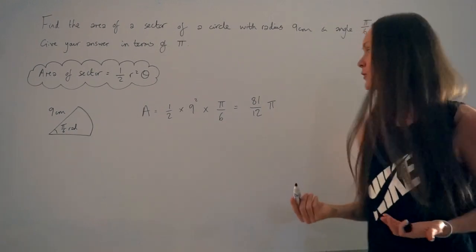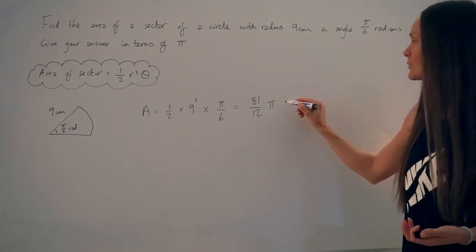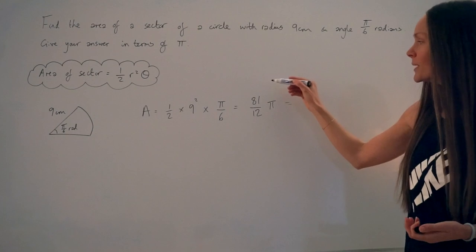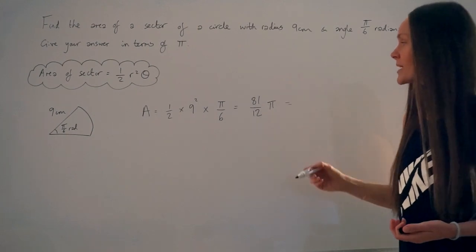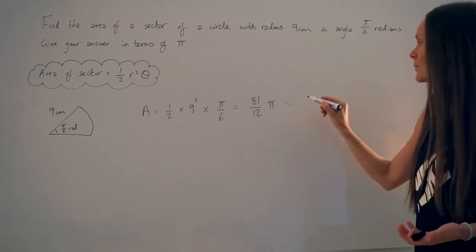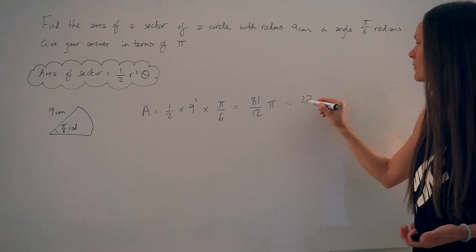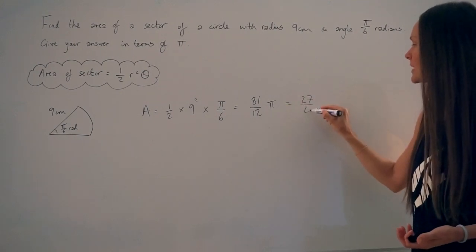But try to simplify the fraction if you can. So this fraction can be simplified. We can divide the numerator and the denominator by 3. So 81 divided by 3 is 27, and 12 divided by 3 is 4.